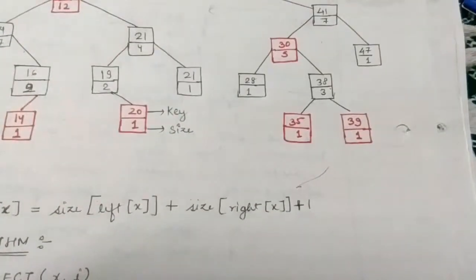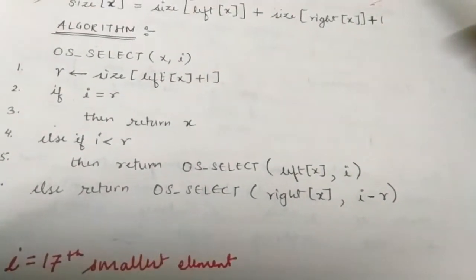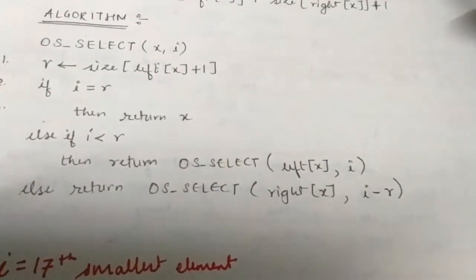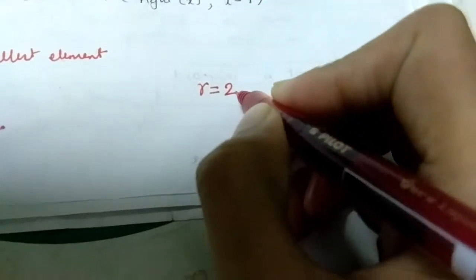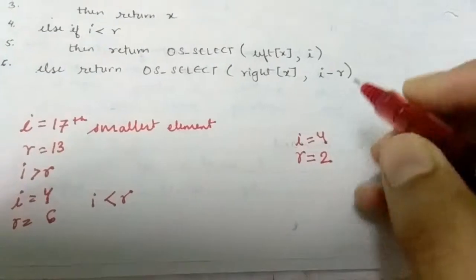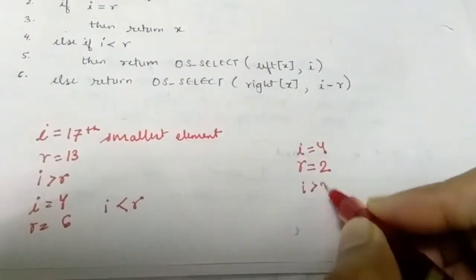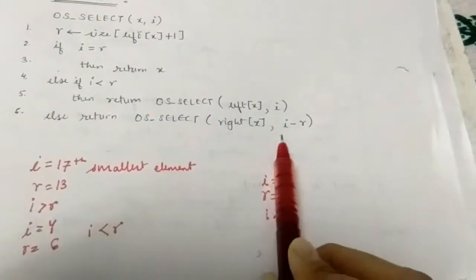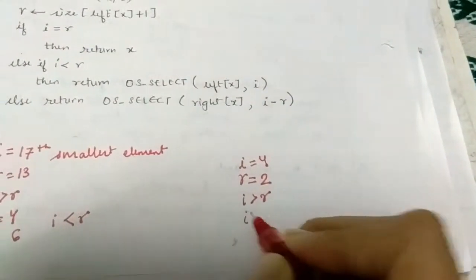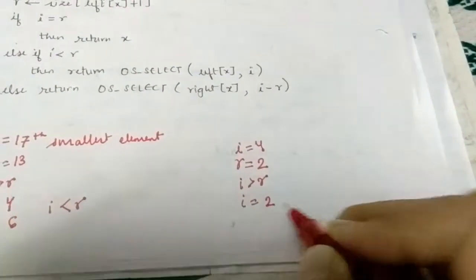We are now at the new node x. Again we compute r as size(left(x)) plus 1. Left(x) has size 1, so r equals 1 plus 1, which is 2. With i equal to 4, i is again greater than r, so we return OS-Select(right(x), i minus r), making i equal to 2, and jump to the right child.